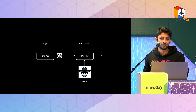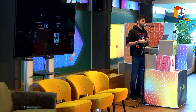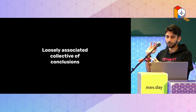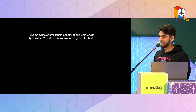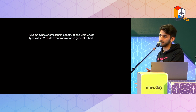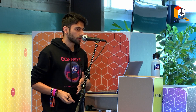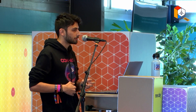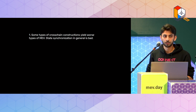MEV and cross-chain stuff is really terrible — it's a much darker, much more foresty forest, and that's why I said this is still super early. What can we derive from this? We can see that some types of constructions for cross-chain applications yield worse types of MEV. State synchronization is bad — you should really never try to do that. It's fundamentally not actually possible, and if you try, you end up in weird situations. I'm pretty sure Synapse is doing this, and if they're doing it on-chain, I'm reasonably sure that's why they have extremely high slippage.